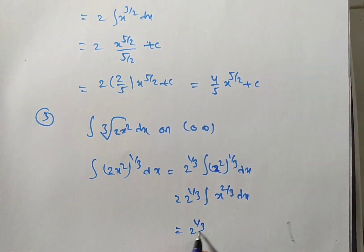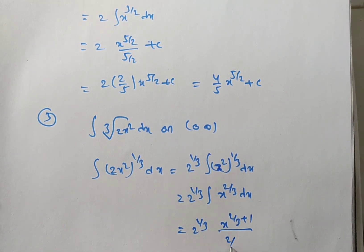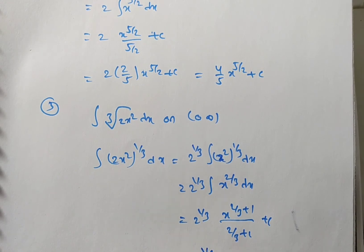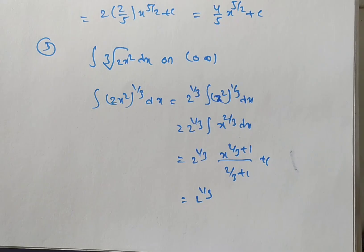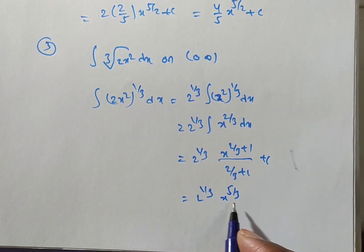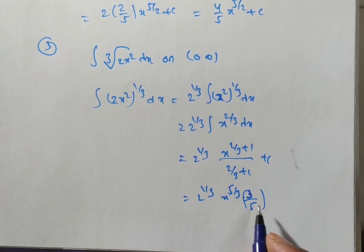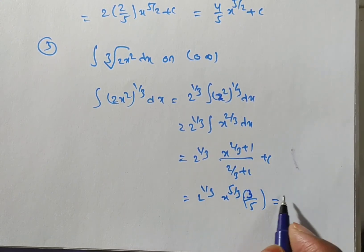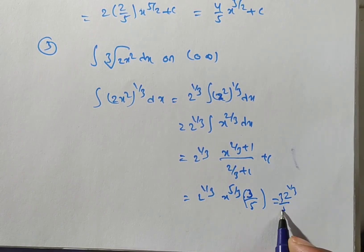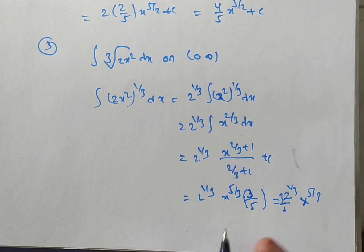Applying the standard form: x power 2 over 3 plus 1 divided by 2 over 3 plus 1 equals x power 5 over 3 divided by 5 over 3. Dividing by 5 over 3 is the same as multiplying by 3 over 5. So the answer is 2 to the power of 1 over 3 times 3 over 5 times x to the power of 5 over 3 plus c.